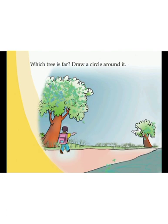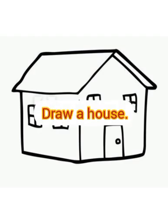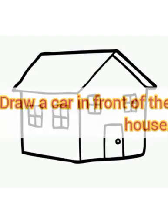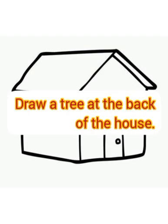Look, we see two trees here and there is a man. Which tree is far? Draw a circle around it — which tree is far from that man? All of you draw a house like this in your notebook, then draw a car in front of the house and a tree at the back of the house.